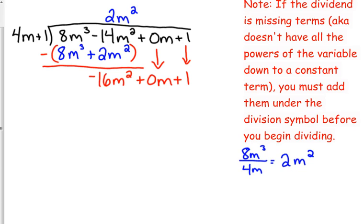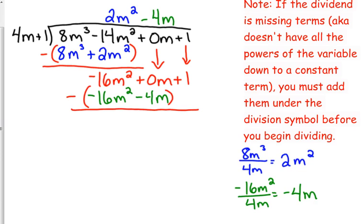Next step. We divide negative 16m², the first term of the remaining polynomial, by the first term of the divisor. Divided by 4m. Negative 16 divided by positive 4 is negative 4. m² divided by m is m. So line that up with your m term. Multiply negative 4m by the divisor. So negative 4m times positive 4m is negative 16m². Negative 4m times 1 is negative 4m. Subtract. Negative 16 minus a negative 16 is 0. 0 minus a negative 4 is positive 4. Make sure you are careful with that. Make sure that you are careful with your negatives because it can throw off the entire problem.